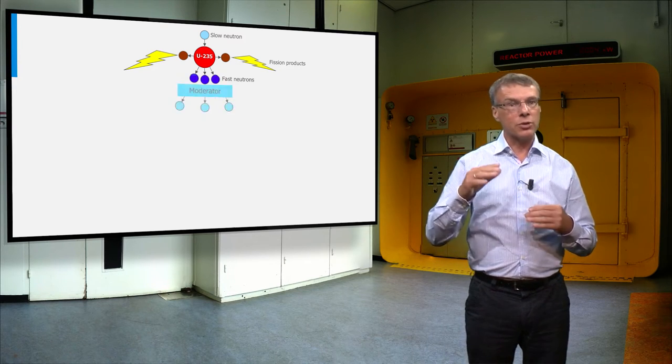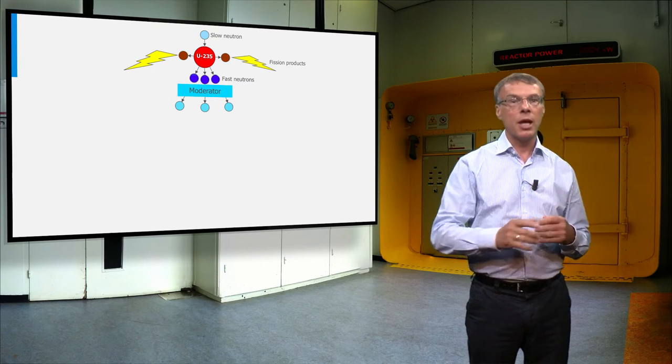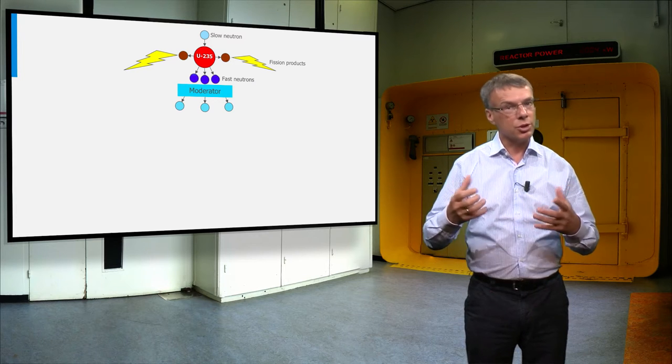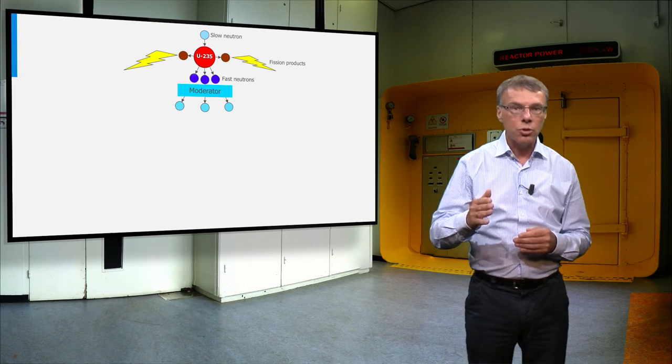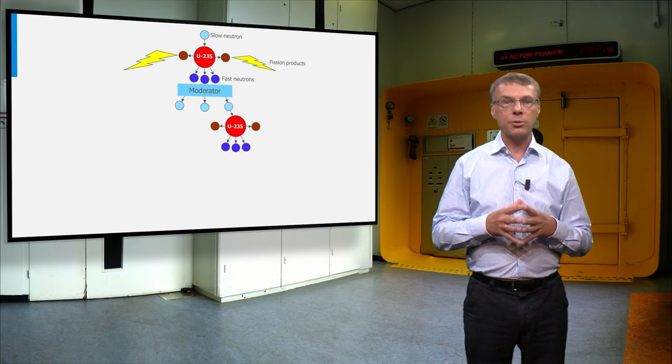Therefore we have to slow down the neutrons by letting them collide with light nuclei, like hydrogen or carbon, a process which is called moderation. The slow neutrons after moderation can easily be absorbed by U-235.